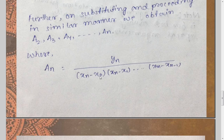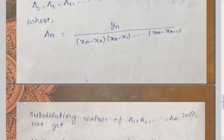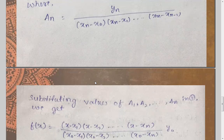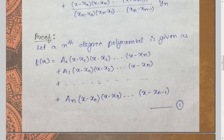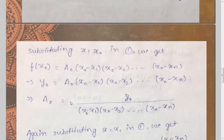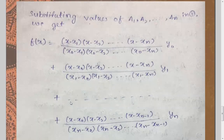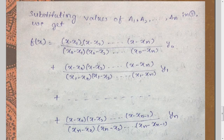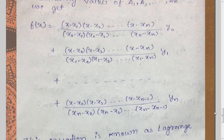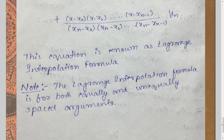For aₙ we obtain yₙ divided by (xₙ minus x₀)(xₙ minus x₁)...(xₙ minus xₙ₋₁). Having found all values of the a coefficients, we substitute them all back into the polynomial. After substitution, no a terms remain, and what we obtain is the Lagrange interpolation formula. One thing to be careful about while applying the Lagrange interpolation formula is that it is applicable for both equally and unequally spaced arguments.